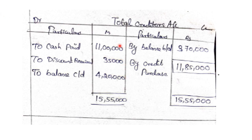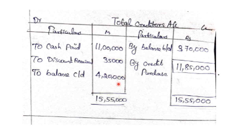Total creditors account — debit side and credit side. On the credit side: opening balance 3,70,000 and credit purchases (to find). On the debit side: cash paid to creditors 11,00,000; discount received 35,000 — we purchase a product and receive a discount; closing balance 4,20,000.